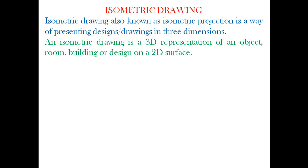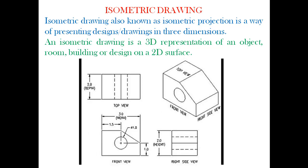That is what isometric drawing actually refers to. An isometric drawing is a 3D representation of an object, room, building, or design on a 2D surface. The surface on which isometric drawing is projected is also two-dimensional — for example, our drawing sheet has a length and breadth, and even the screen you are viewing this video from is two-dimensional.